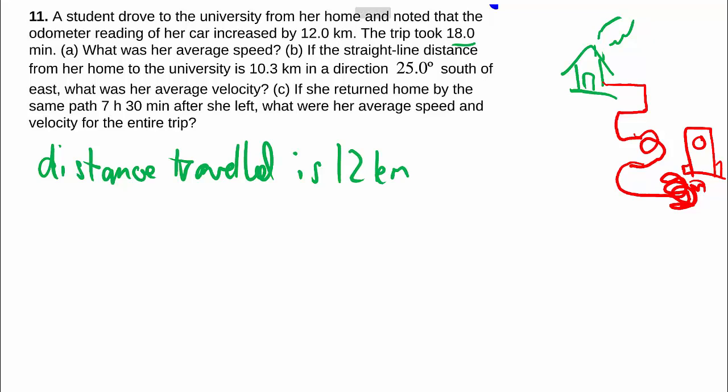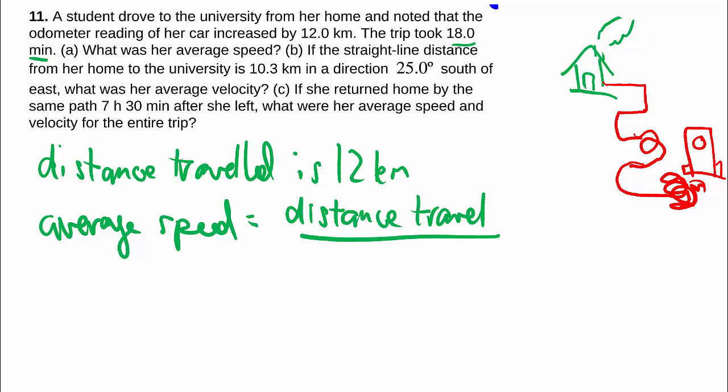We have time that's given to us which is nice because when we want to find average speed, it's equal to the distance traveled over time, that being 12 kilometers over 18 minutes.